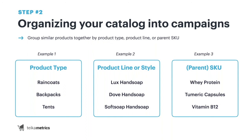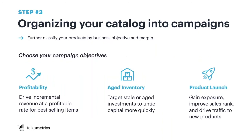We often see sellers just put products into one big category with a real lack of relevancy. You want to focus on the fact that Amazon is a big search engine, and you need to put yourself in the customer's shoes searching for your product. Being disciplined about which product goes into which category is really important before you even get into campaign setup.